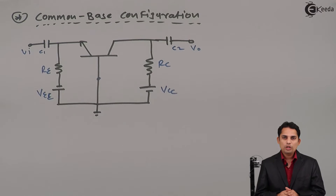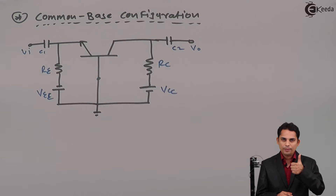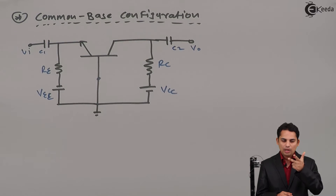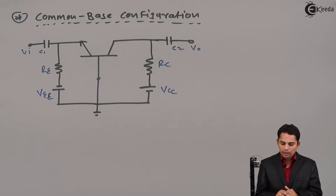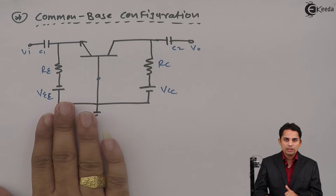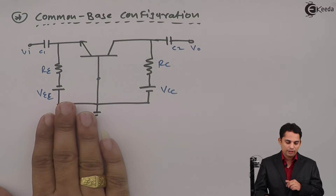Hello students. We know that there are three different configurations of BJT: Common Emitter, Common Collector, and Common Base. We have already studied about Common Emitter and Common Collector. Now we will start studying about Common Base Configuration.